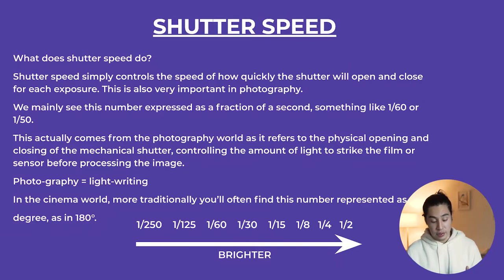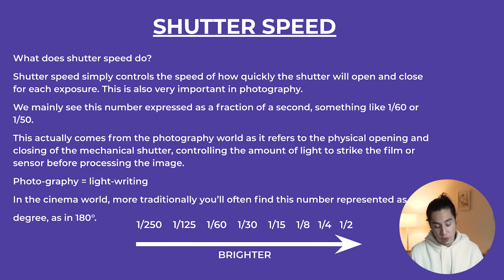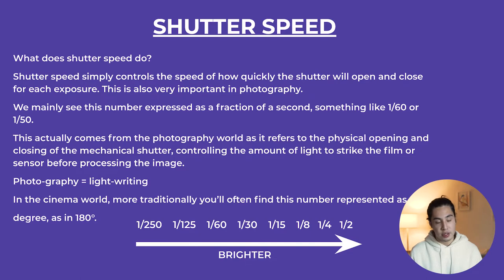Moving into the next component of the exposure triangle: shutter speed. Shutter speed simply controls the speed of how quickly the shutter will open and close for each exposure. This is very important in photography. My course is obviously more towards filmmaking, but I dabble a lot in photography because this is a course not only for filmmakers but for all digital creators — filmmakers and photographers. Super important.